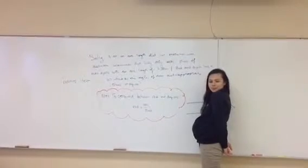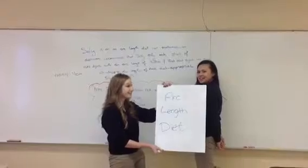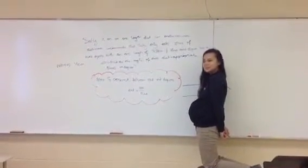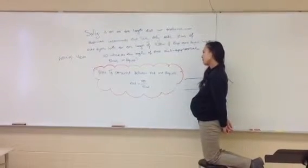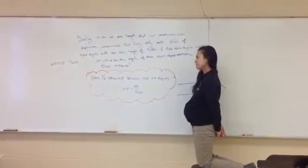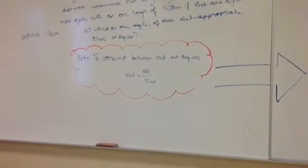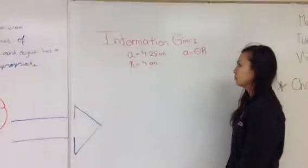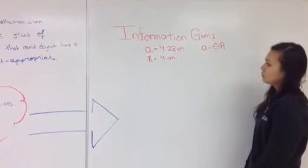Sally is on an arc length diet. Her mathematician dietician recommends that Sally only eat slices of round objects with an arc length of 4.28 cm, given that the round object has a radius of 4 cm. What are the angles of these diet-appropriate slices in degrees? To convert between radians and degrees, we multiply radians by 180 degrees over pi radians. The given information is that A equals 4.28 cm and the radius is 4 cm.